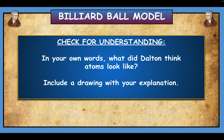Check for understanding: on your page you have a white space. I want you to draw a billiard ball model of an element called sodium—let's make it blue. Pause the video and do that. If you need to go back and look at your notes to find out how to draw this, do that. Then next, draw another atom of a different element. This is how I'm checking for your understanding: what did Dalton say? If an element is different from another one, how did he represent that?